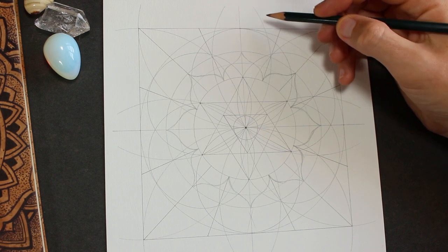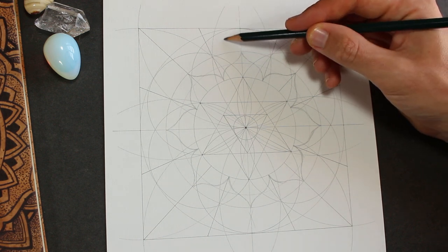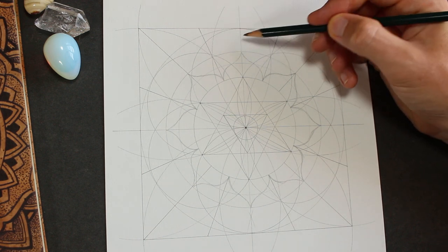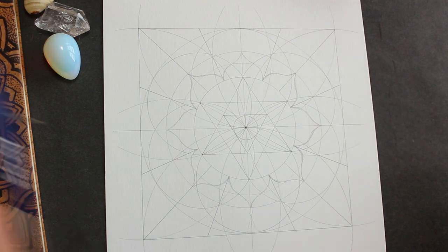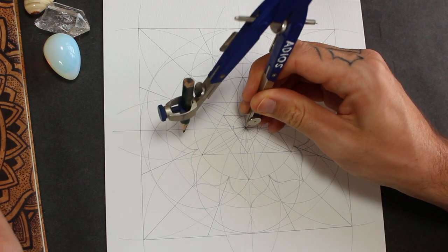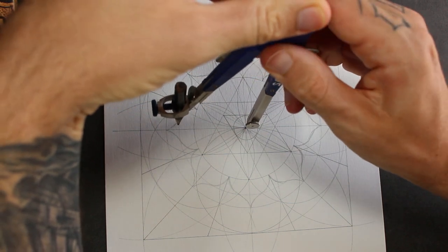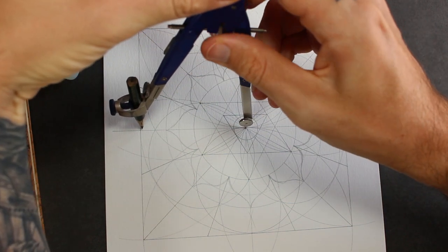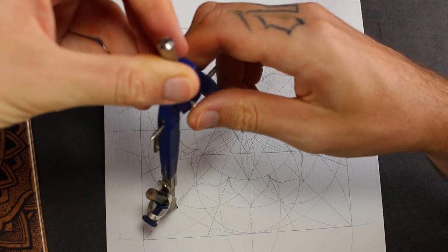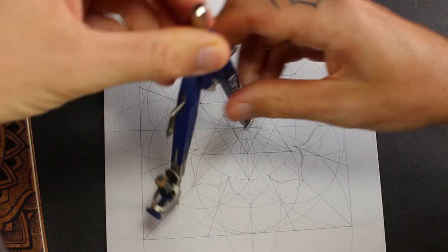Now we're going to do the 16. But as you can see, this needs to be divided further. So I need to grab the compass again. And I'm going to set it back to the size of this circle here that meets the square. This is the circle that goes around the outside of the seed of life.